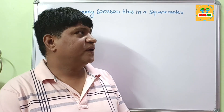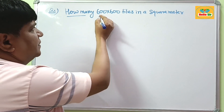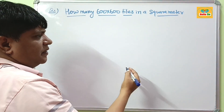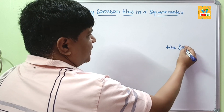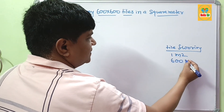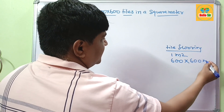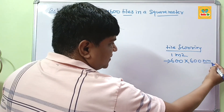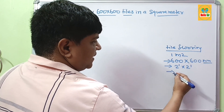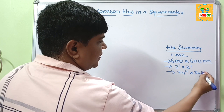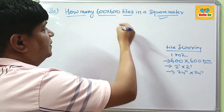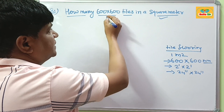Hi guys, today in this topic we will learn about how many 600x600 tiles are required for 1 square meter tile flooring area. If your tile flooring area is 1 square meter and your tile size is 600x600 millimetres, if you want to convert this into feet it will be 2 feet by 2 feet, or in inches 24 inches by 24 inches. But since your tile flooring area is given in square meters, we need to calculate accordingly.